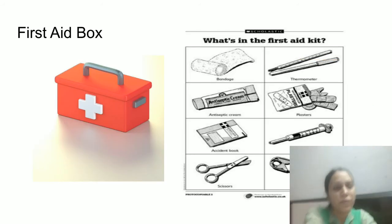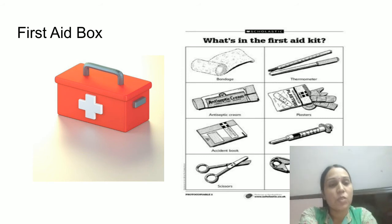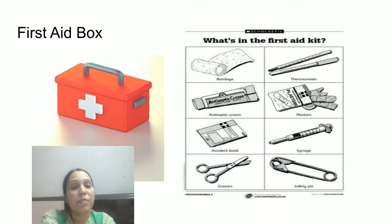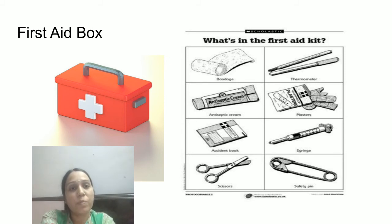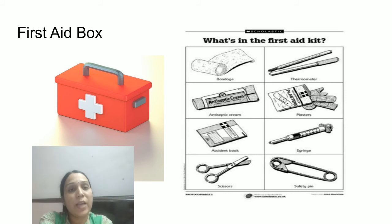Now let's learn about the first aid box — a very important topic. It is very important that we all keep a first aid box at home. We don't know when an accident may happen. In the picture it is shown what things should be kept in the first aid box: a bandage, antiseptic cream, scissors, thermometer, and plasters.